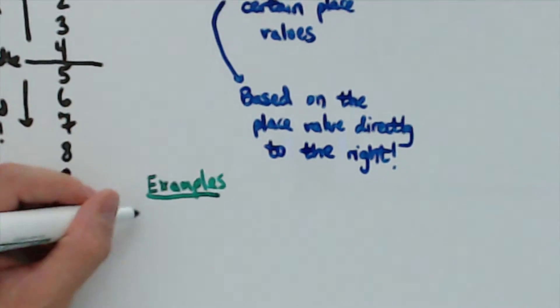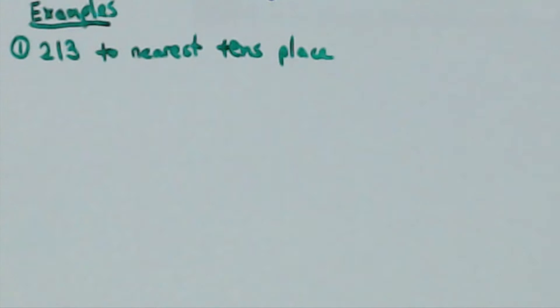Here are some examples to solidify your understanding. Number 1 says to round 213 to the nearest tens place. You need to look at the number directly to the right of the tens place, which is the ones place. The number is 3, and since it is less than 5, the number 213 needs to be rounded to 210.